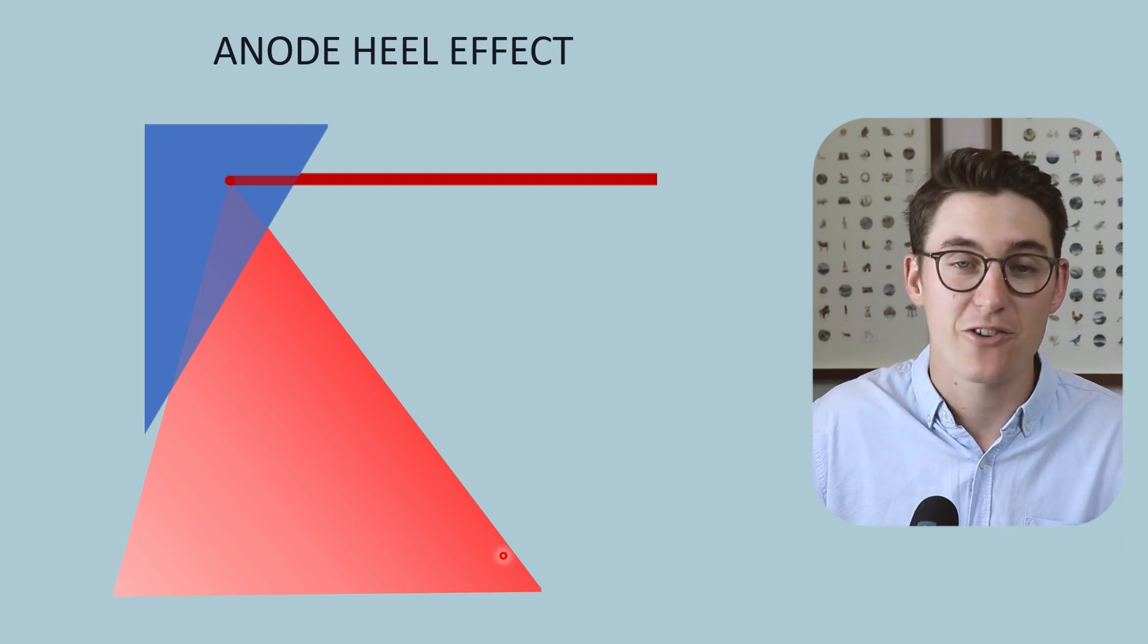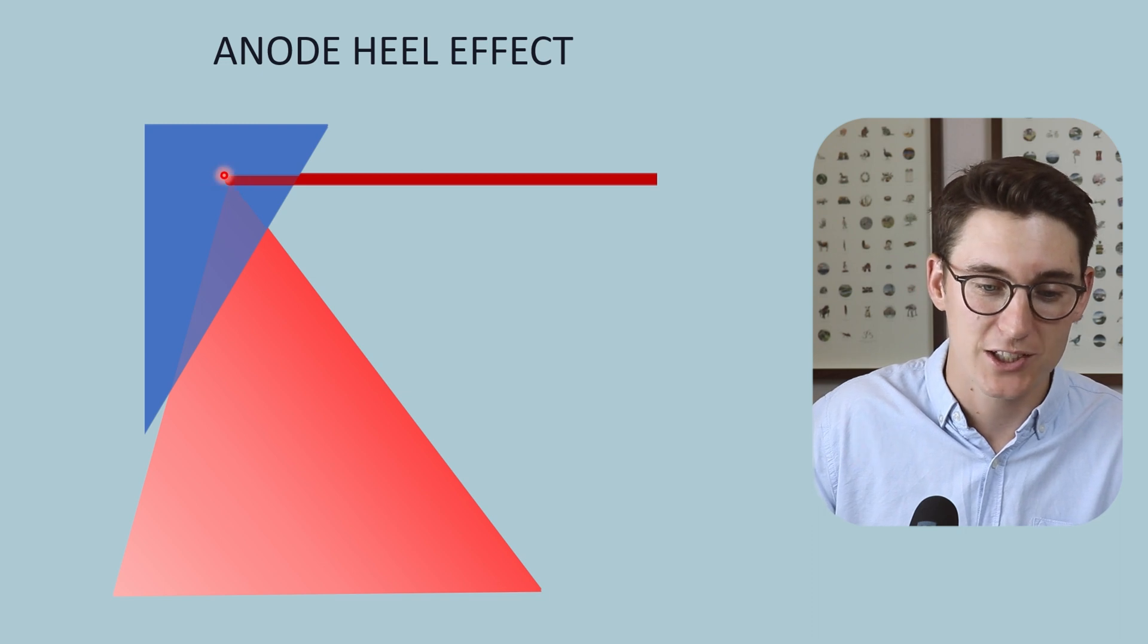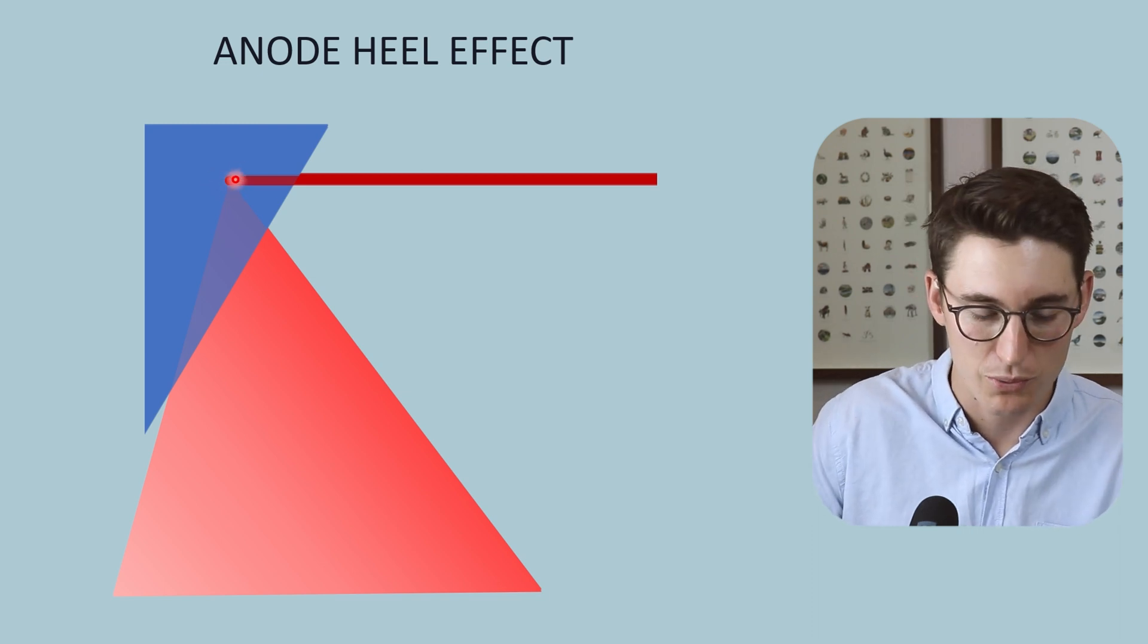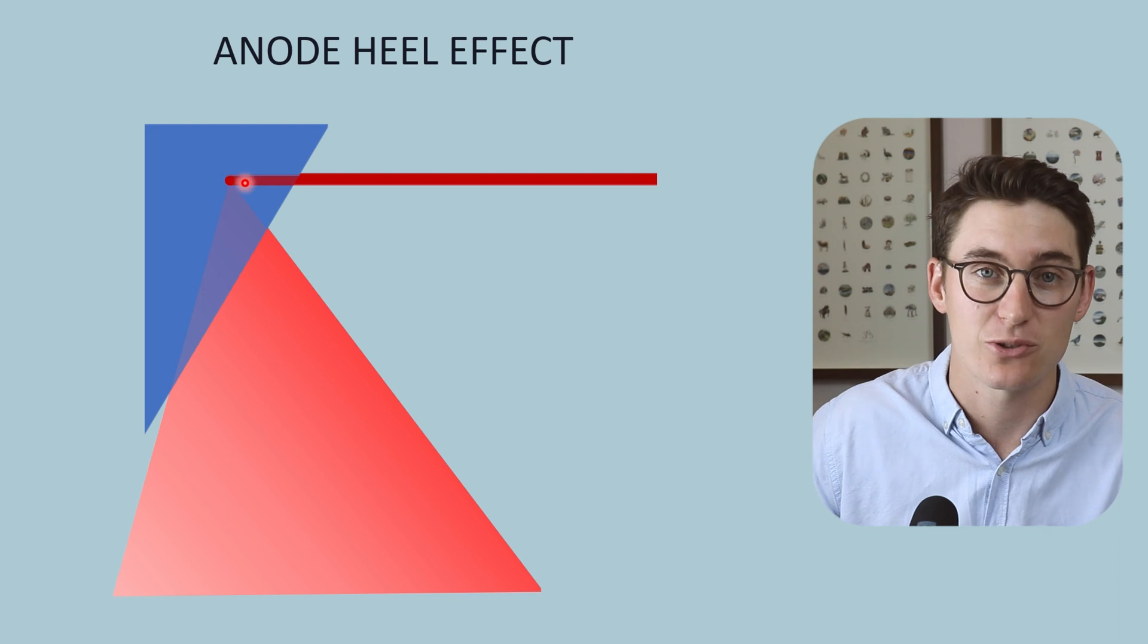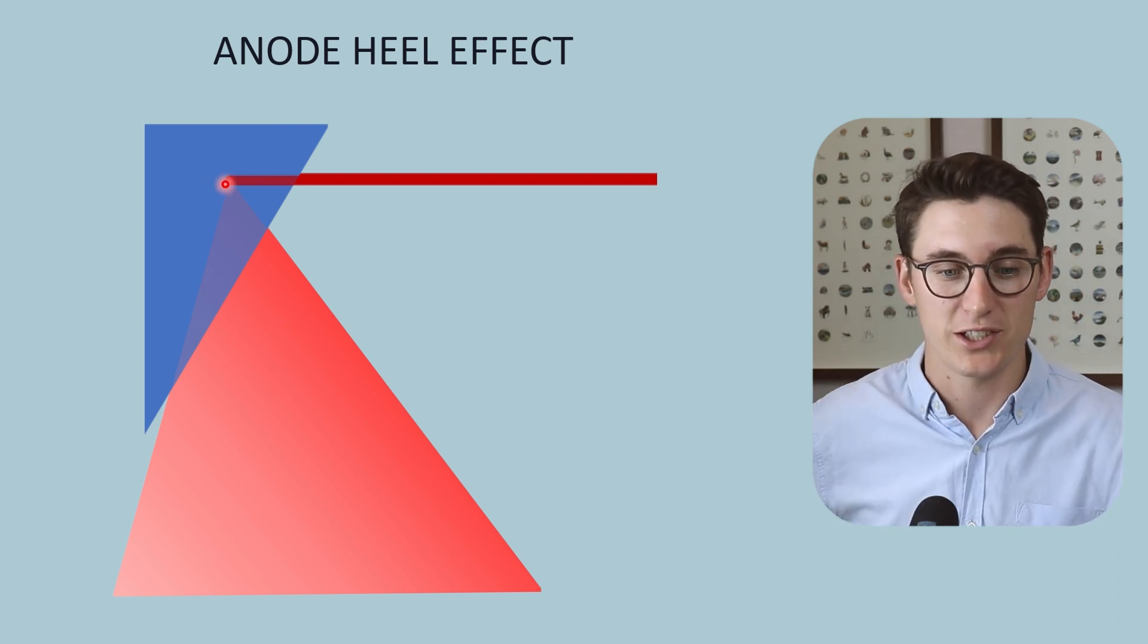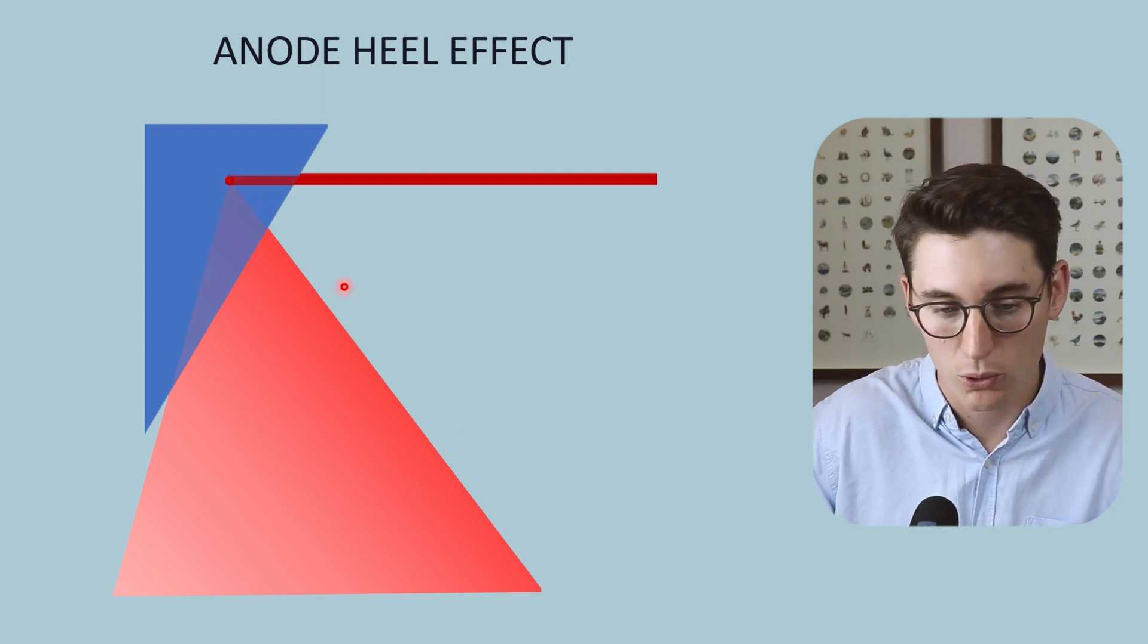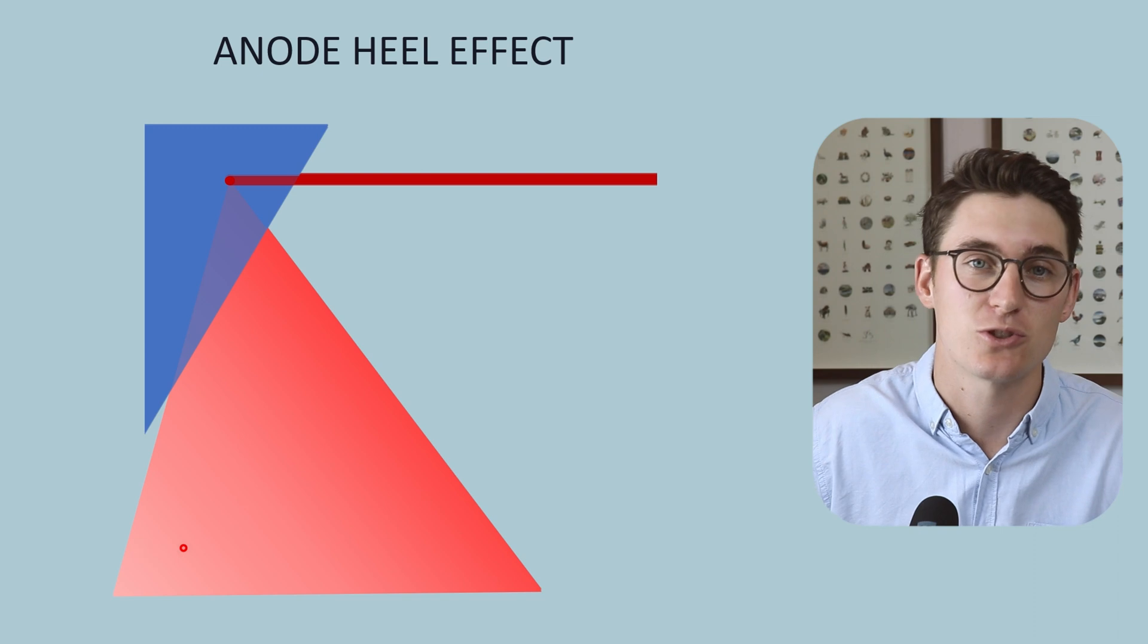Now this variation in x-ray beam intensity occurs because when we produce x-rays, we're still going to go through the process of bremsstrahlung or characteristic radiation, x-rays are released in 360 degrees. They're isotropic. They're released in all directions.